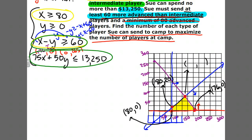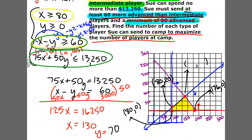We're back wrapping up this huge mess of a problem. We determined that the intersection point when we solved that system of equations using the elimination method was 130 advanced players and 70 intermediate players, which gives us a maximum of 200 players. That would send a total of 200 players to camp, which is 24 more players than if you just sent all advanced.